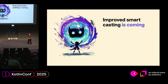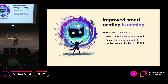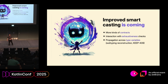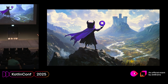The good thing is we are trying to improve this. We are bringing more types of contracts, we want exhaustiveness checking to interact better with smart casting in the next version, and we even want to propagate across type variables. With this we will be able to conquer the castle of KotlinConf.